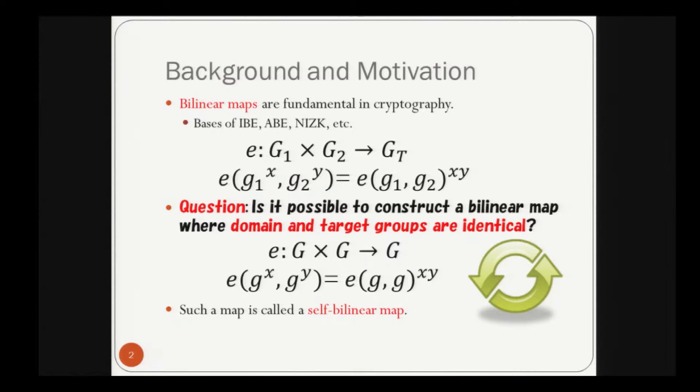Bilinear maps are fundamental in cryptography. They are the basis of many useful cryptographic primitives such as identity-based encryption, attribute-based encryption, and non-interactive zero-knowledge proof systems. In the construction of cryptographic bilinear maps, a target group GT is different from domain groups G1 and G2. In particular, we cannot use an output of the map as input of the map again. This could be an obstacle in some applications.